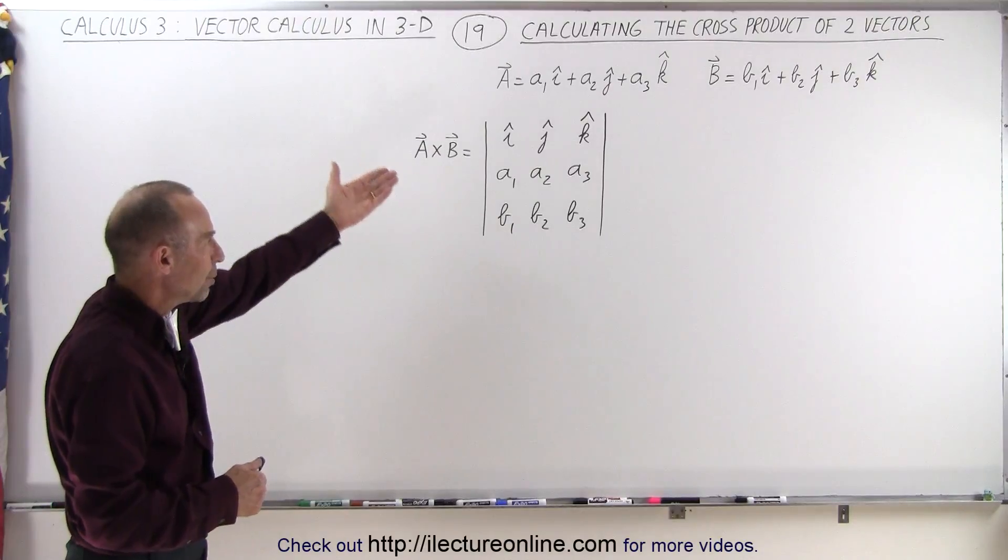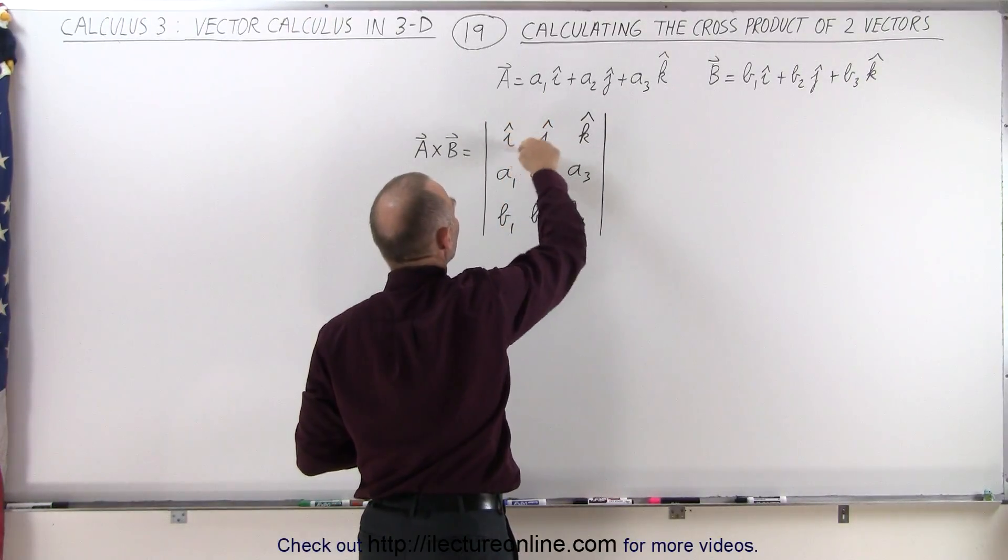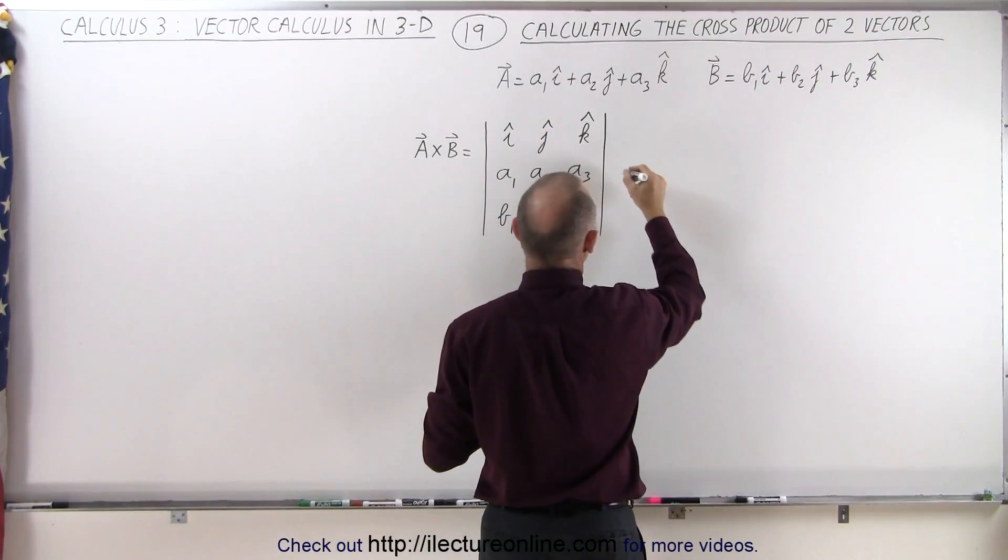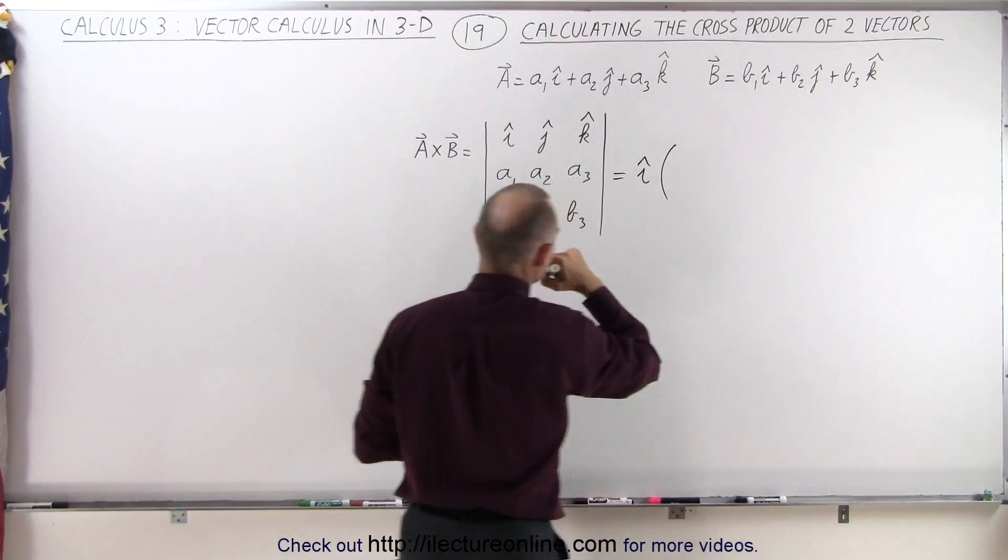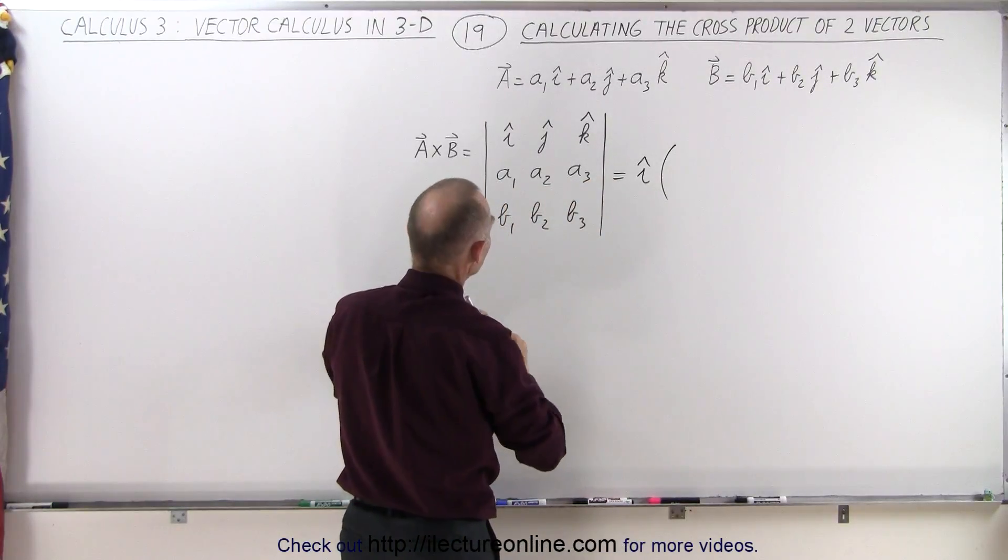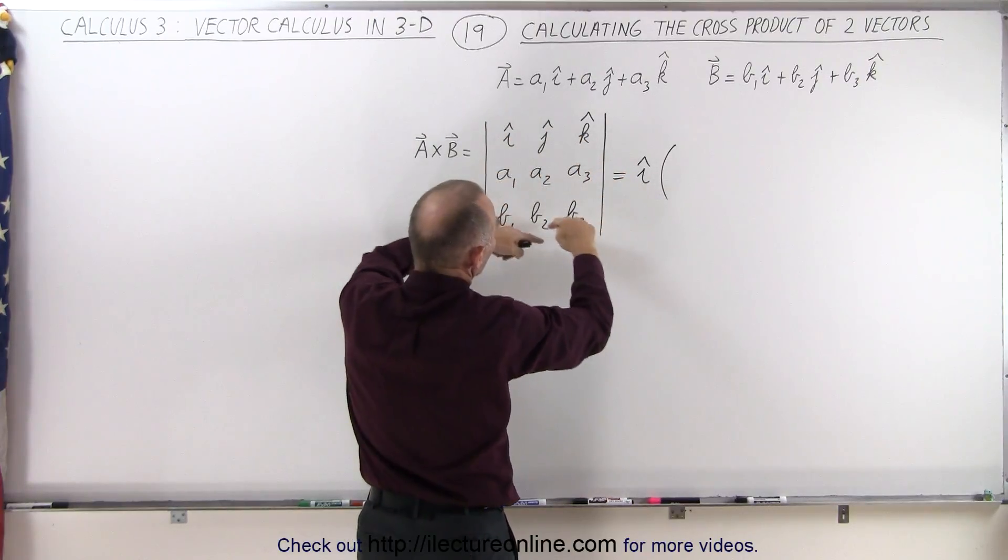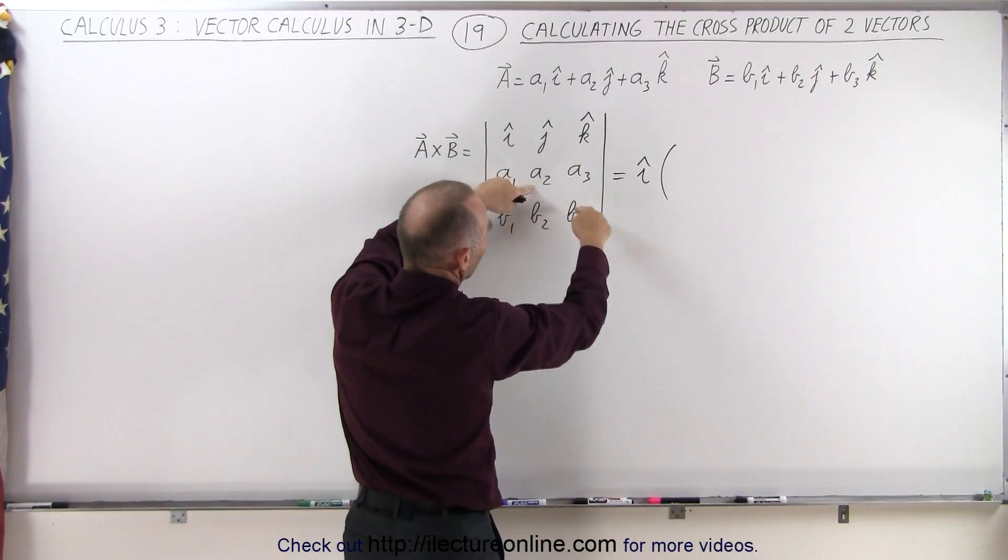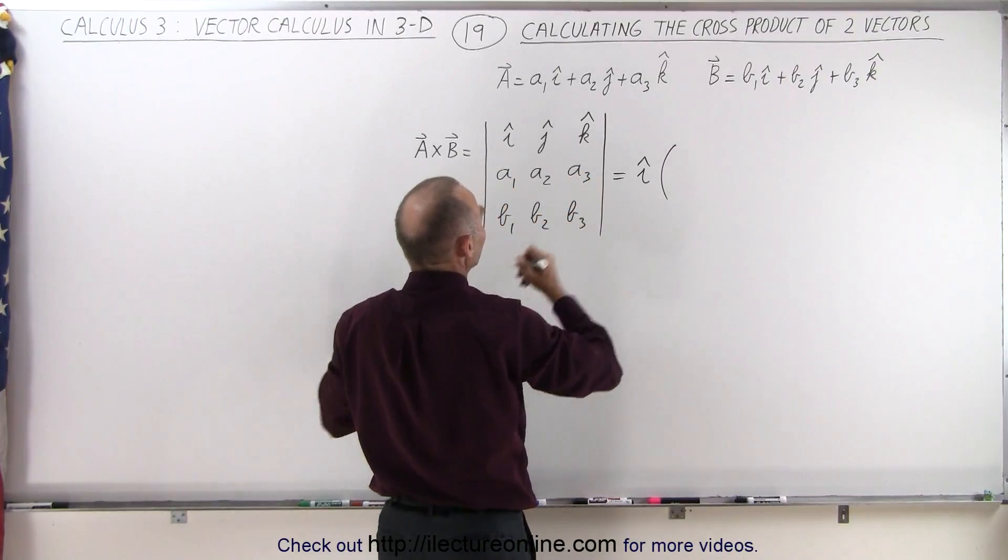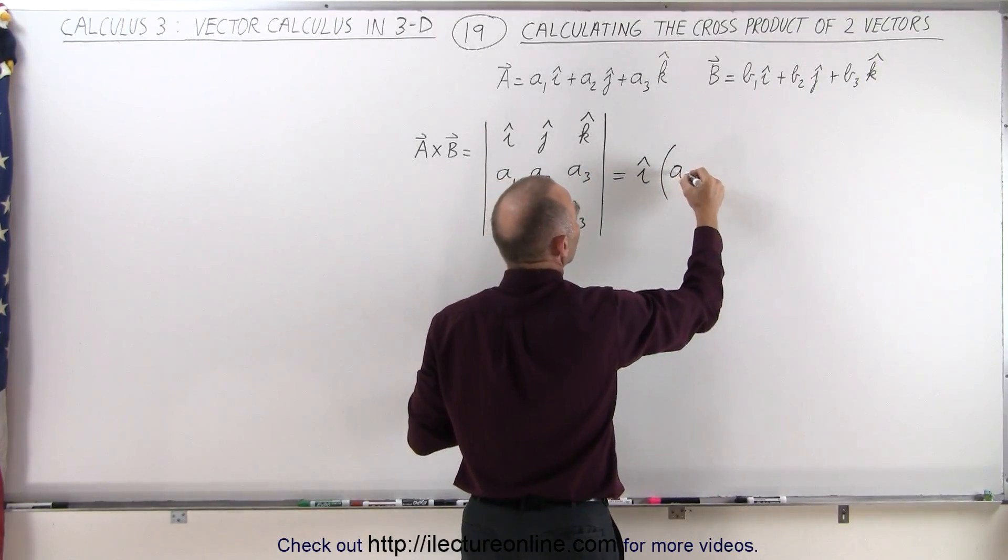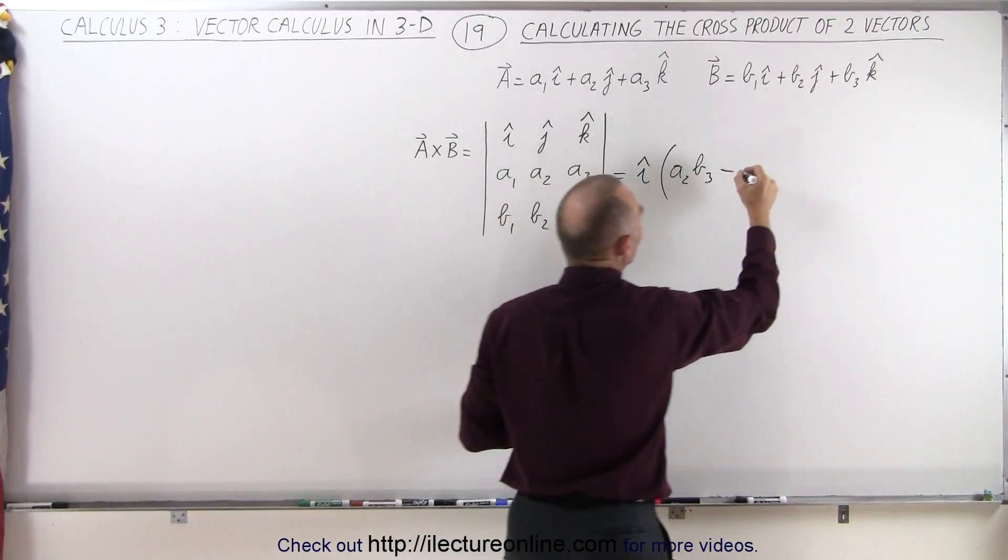Now, how do we work this out? Well, we take the first element right here in the matrix, so this is equal to the i unit vector. Now, think about it. If you get rid of this column right here and this row, you have these four elements left. You're going to multiply these two elements and subtract the product of these two elements. So this is going to become i times A2 times B3 minus A3 times B2.